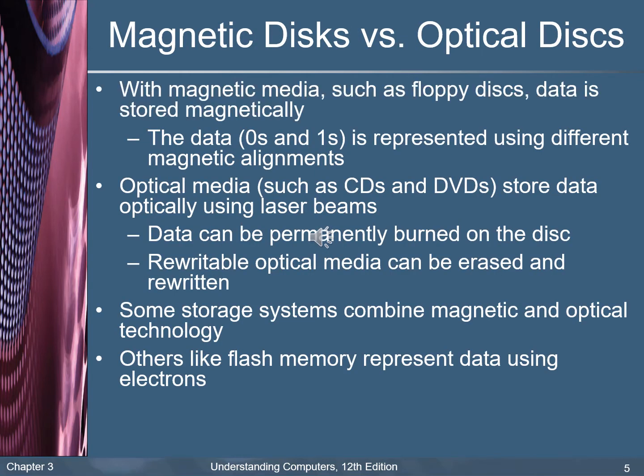Storage media vary from magnetic disk to optical disk. With magnetic media such as the floppy disk, data is stored magnetically using magnetic spots. The data presented as zeros or ones is represented using different magnetic alignments. Optical media such as CD or DVD store data optically using laser beams. Data can be permanently burned onto the disk. Re-writable optical media can be erased and rewritten. Some storage systems combine magnetic and optical technology. Other types like flash memory represent data using electrons — that is the newest one.